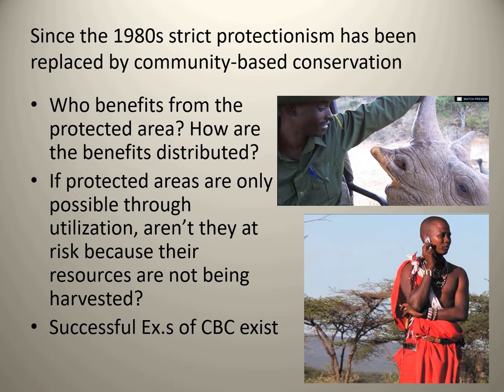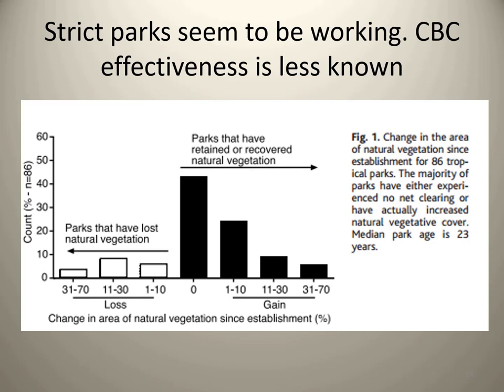Even though indigenous people are not necessarily intentional conservationists, it's increasingly being recognized that disenfranchising people from their territory can actually have adverse conservation effects — not to mention the concern for human rights and social justice. Aside from social justice concerns, the support of people living near or on the borders of the protected area is usually crucial to its success. Successful examples of community-based conservation exist, though CBC hasn't been around nearly as long as national parks and other protected areas.